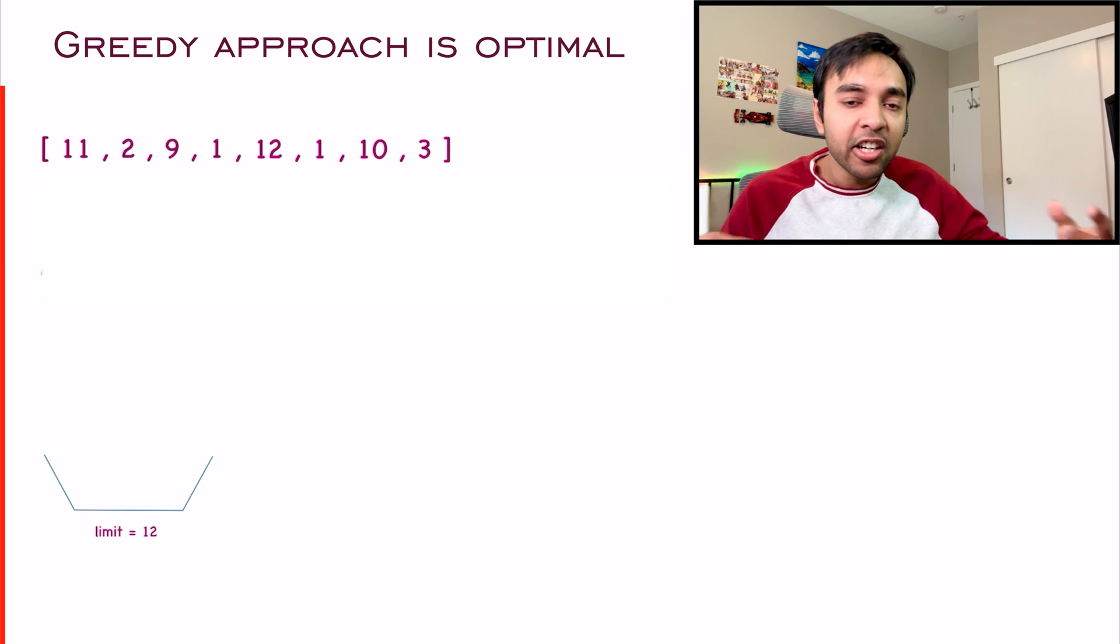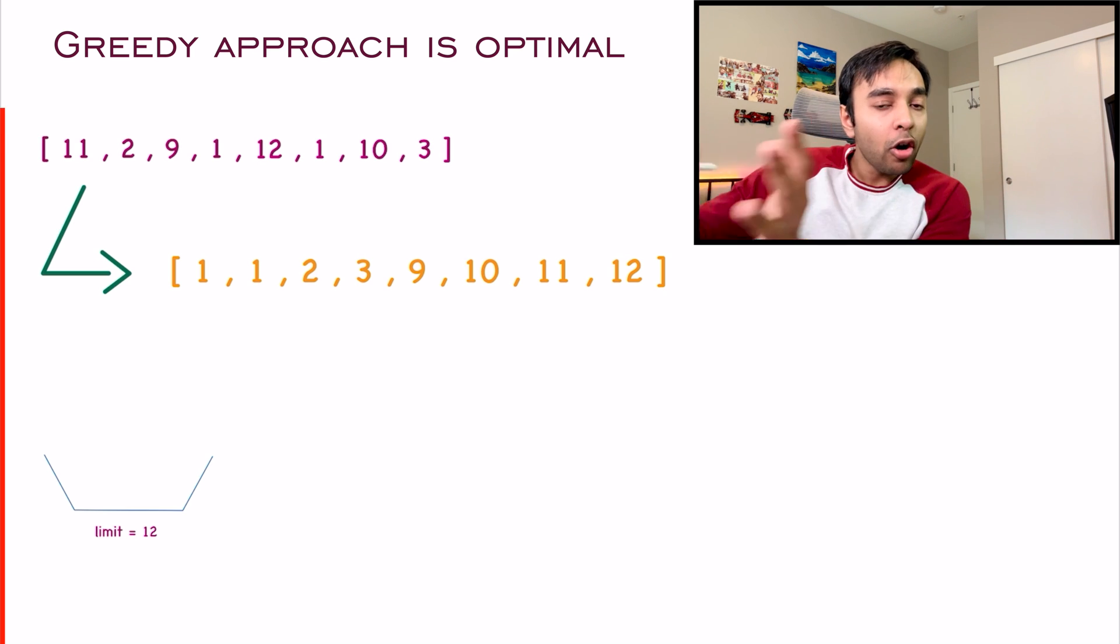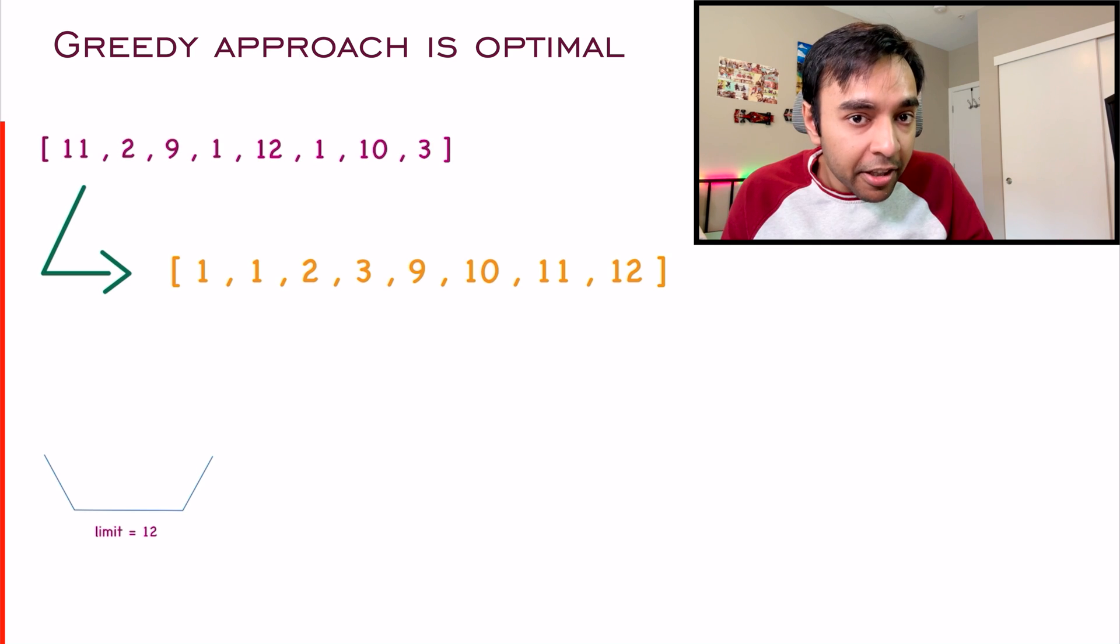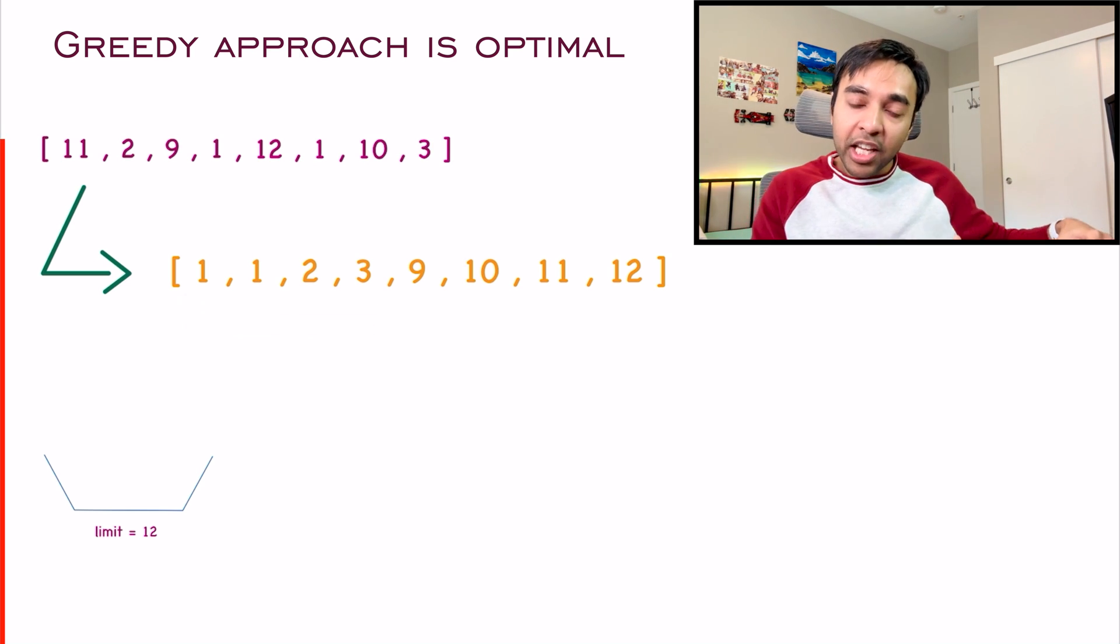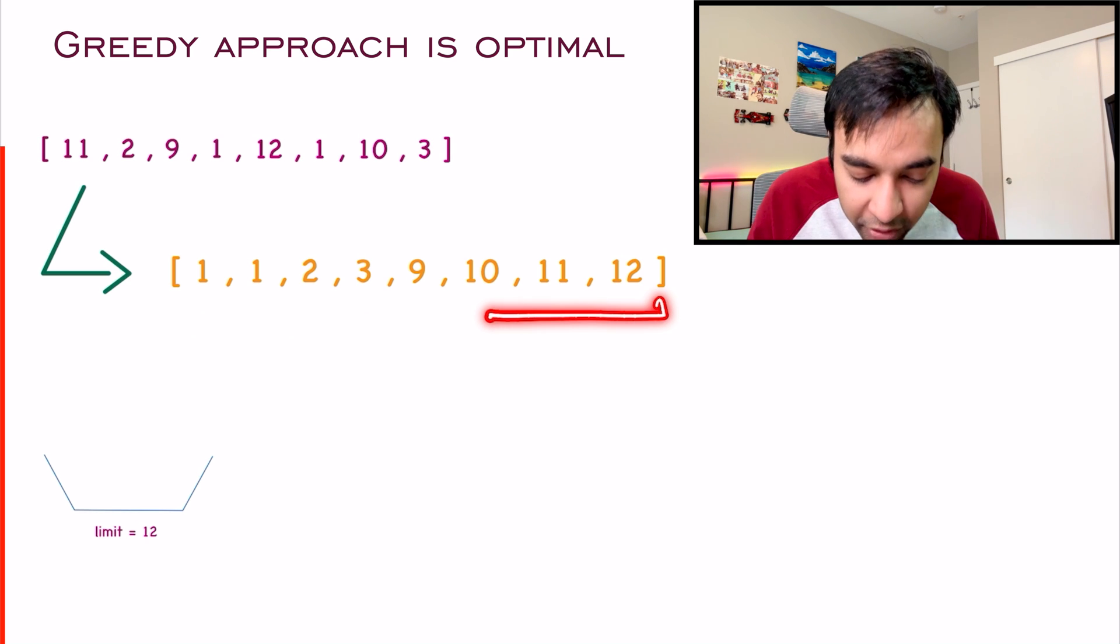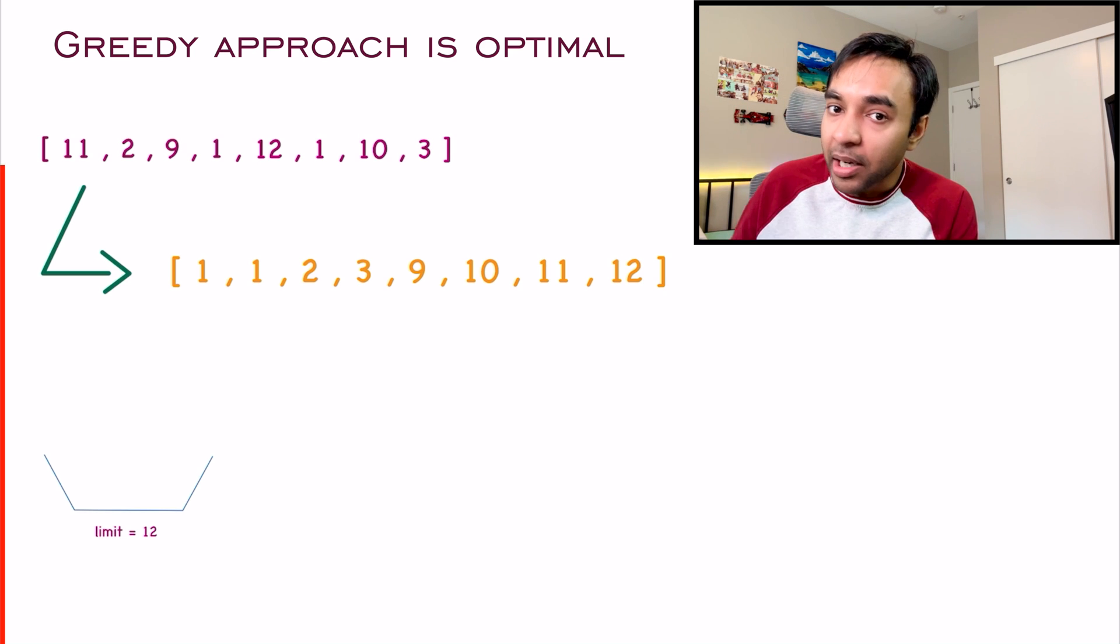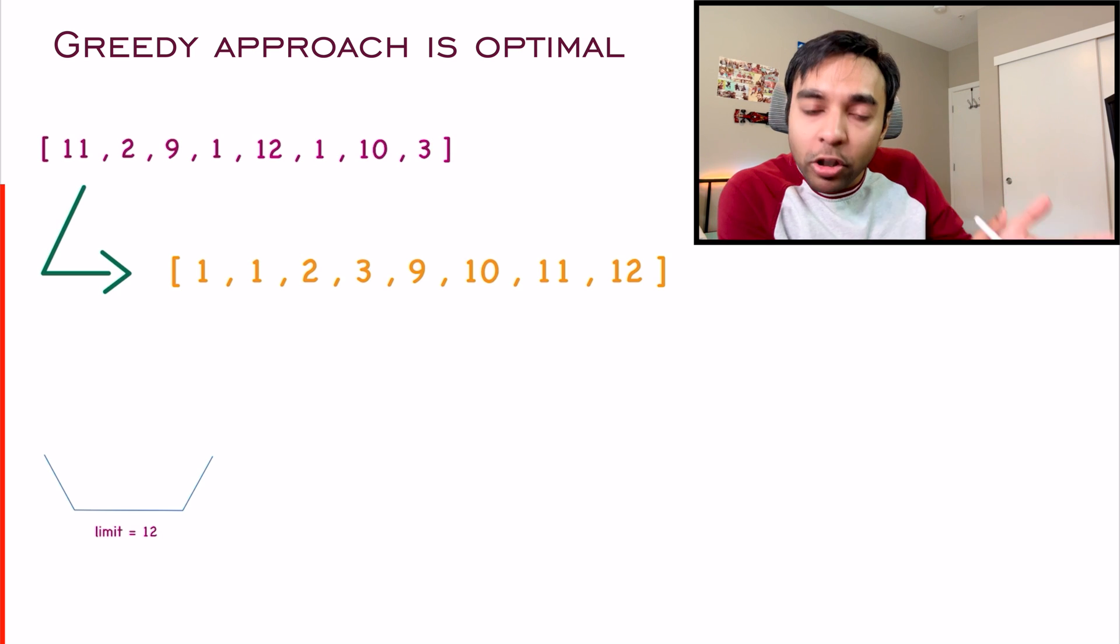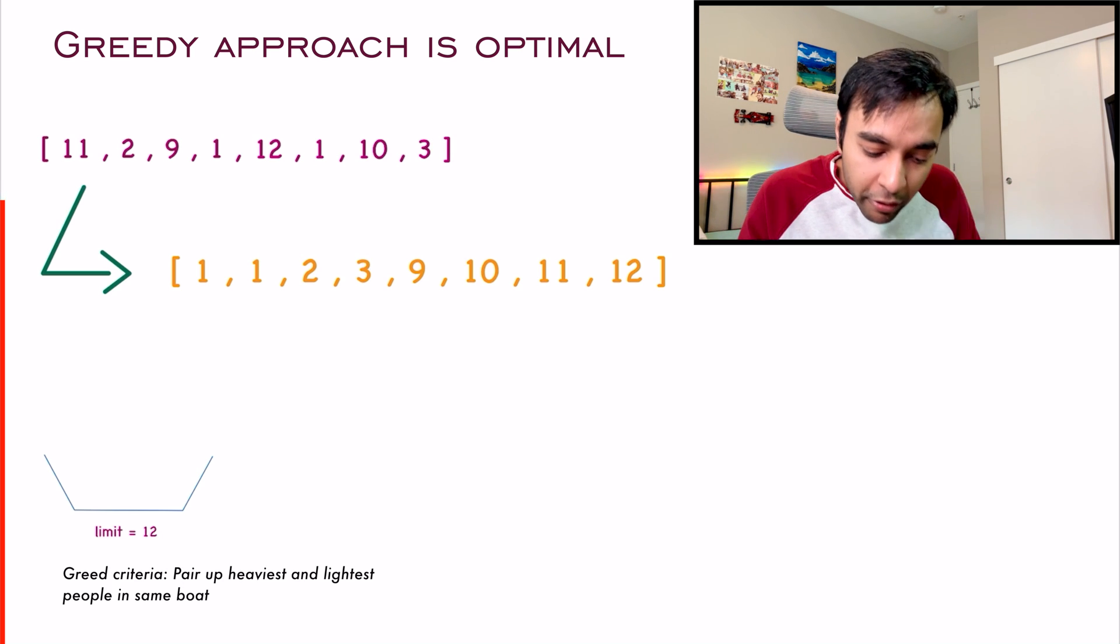What we can do is we can try to sort the array. By sorting, I am sure that all of the lightweight people will be in one group and all of the heavyweight people will be in the other group, and then we can proceed ahead. I am getting all of the lightweight people over here and all the heavyweight people over here. Try to think, you have to transport all the people. And all the heavyweight people will also have to go.